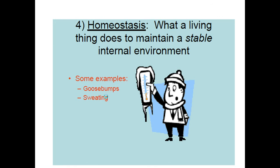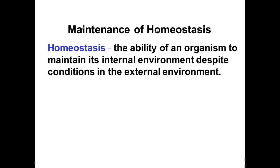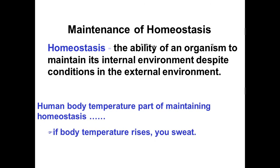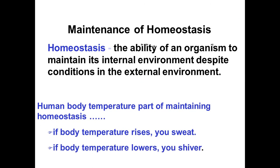The fourth characteristic of living things is called homeostasis — what a living thing does to maintain a stable internal environment. This includes keeping your temperature the same, keeping your level of hydration the same, keeping the same amount of salt and liquid in your bloodstream. Homeostasis is the ability of an organism to maintain its internal environment despite conditions in the external environment. If body temperature rises because of a fever, heat, or running a marathon, you sweat to cool it down. If your body temperature gets too low because it's cold outside, you shiver to maintain a warmer internal body temperature.